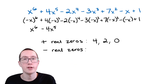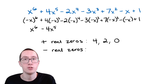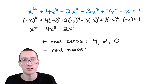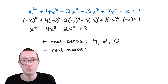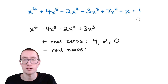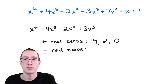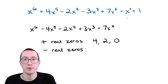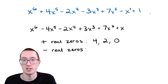Here's the shortcut: whenever you have an even exponent, the negative signs all cancel out and it stays exactly the same. But if you have an odd exponent, it stays the same except you're left with a negative sign — so you change the sign. For example, negative two x to the fourth stays negative two x to the fourth. And negative three x to the third becomes positive three x to the third. So plus seven x squared stays the same, minus x becomes positive x (since one is odd), and plus one stays the same (zero is even).